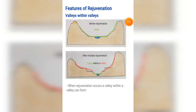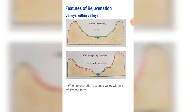The second feature is valleys within valleys. A valley within a valley is created after rejuvenation when the river carves another valley deeper inside the original valley. This can be seen in the second diagram where the original valley is highlighted in red and the new valley inside the valley is highlighted in green, clearly showing a new valley within the older valley.